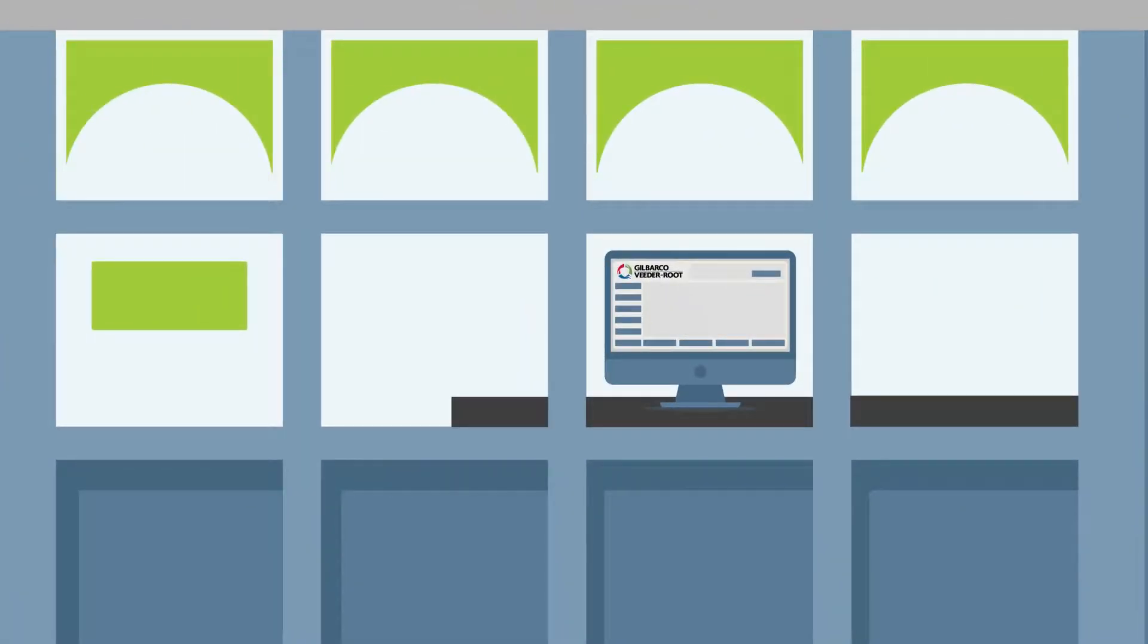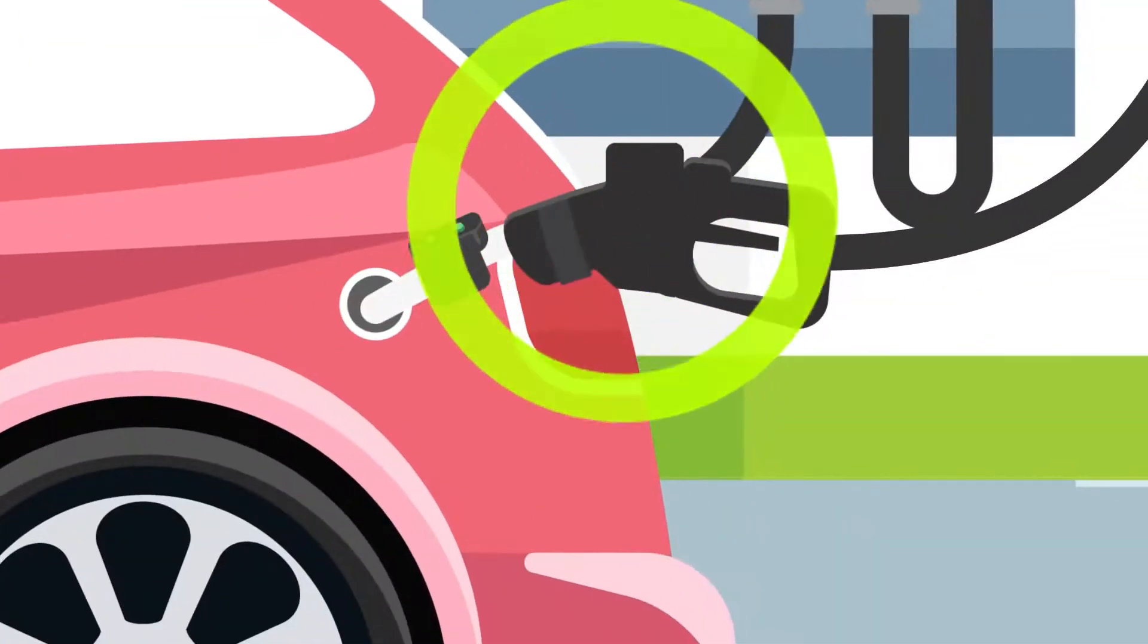The controller then sends a request to the authorization server, which returns approval, balance and restrictions if any. Once approved, the pump is authorized.